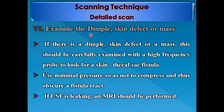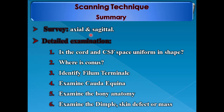The sixth and last question is: examine the dimple, sinus tract, defect, or mass if present. This should be carefully examined with a high-frequency probe to look for a skin cycle sac fistula. Use minimal pressure so as not to compress and obscure a fistula tract. If CSF is draining, MRI should be performed. To summarize: do a rapid survey in axial and sagittal planes, then detailed examination answering all six questions.